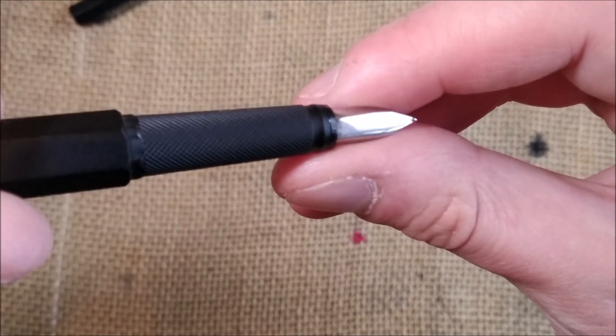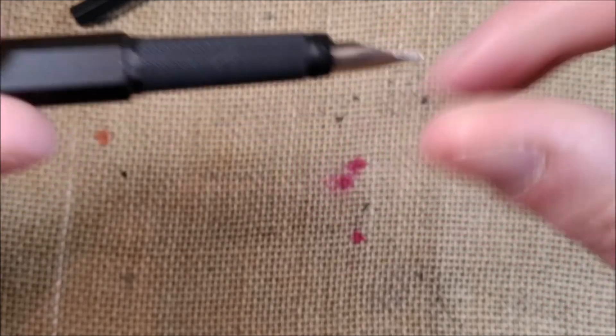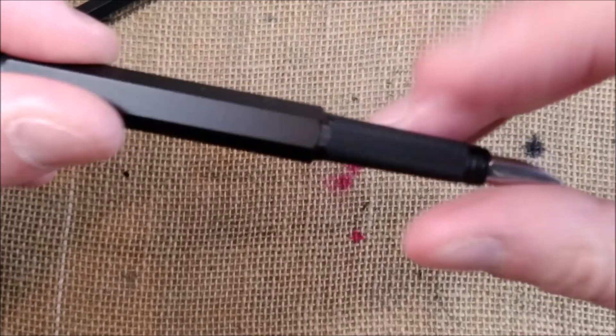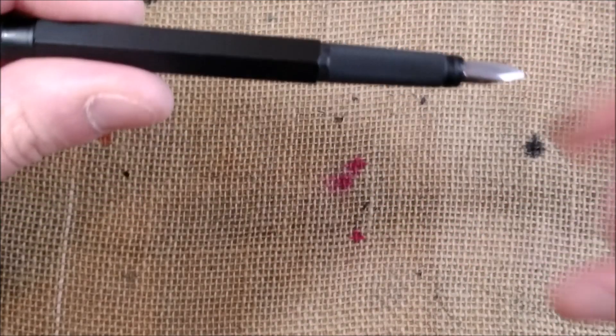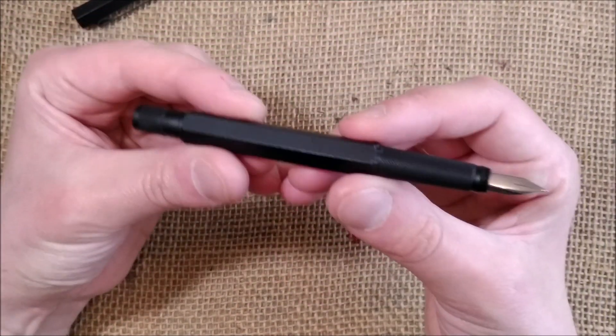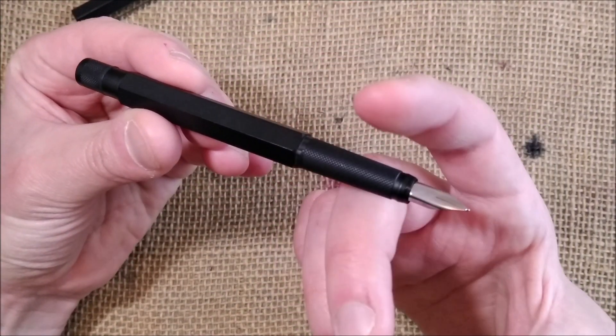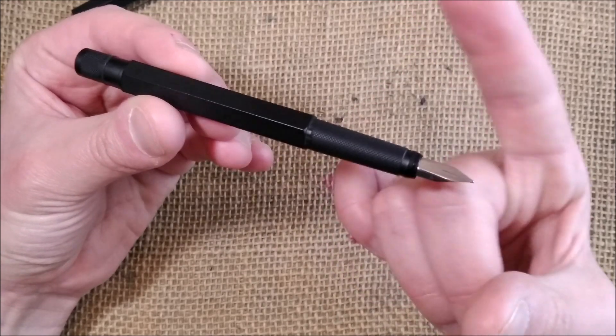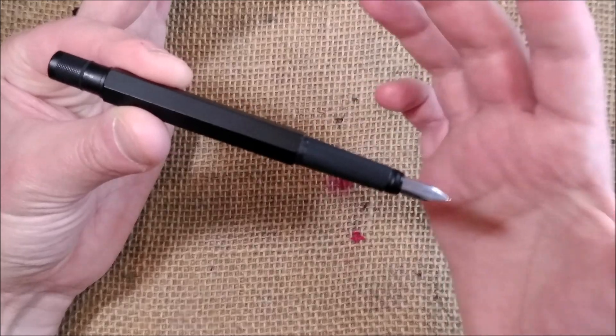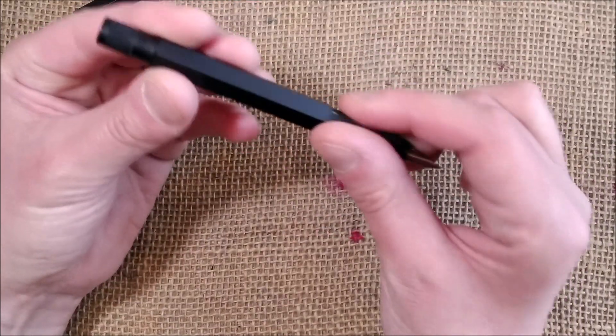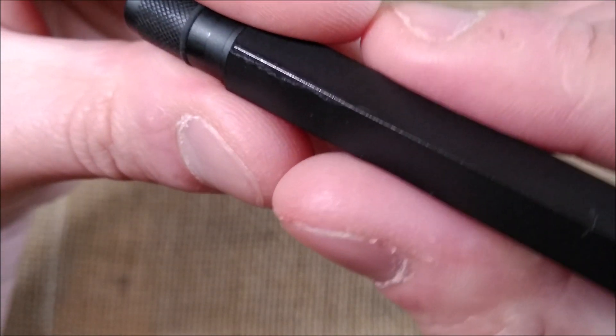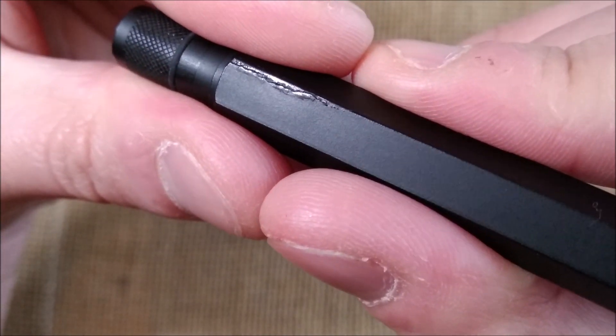However, this pen has a problem that many, or at least some, Rotring 600 had. And you can even find on eBay some pens being sold in that condition, and they are still expensive even if they are with problems. So it is quite amazing. This pen is quite expensive. It is that the pen has a crack on the barrel.